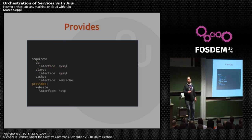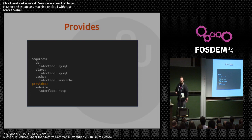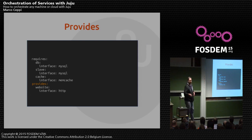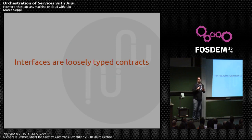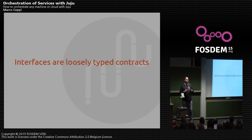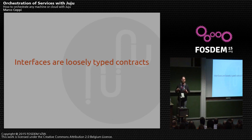'Provides' is something that your charm is going to expose to the environment. So if you're deploying a web service and it provides a website relationship, that means it's going to send over the private address and probably port 80 so you can hook it up to a load balancer. Interfaces are loosely typed contracts — we don't superimpose any kind of RFC, there's no standardization. You are free. This is kind of the Wild West in Juju, where you can get in there and really start defining your applications and how they talk to one another.